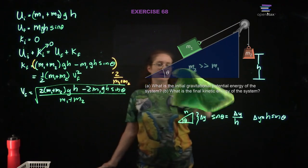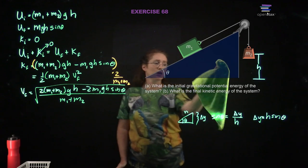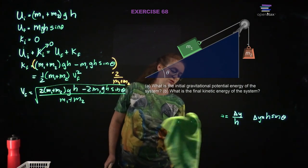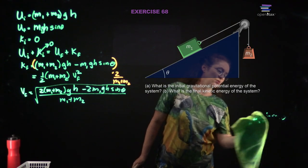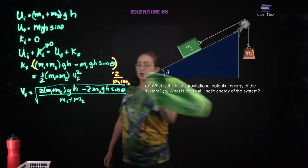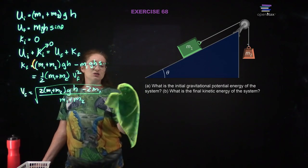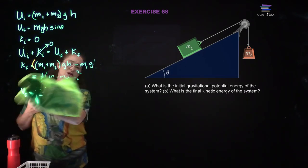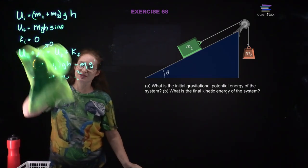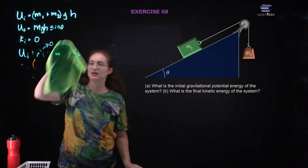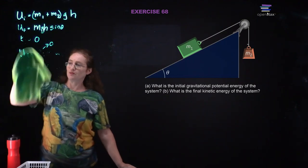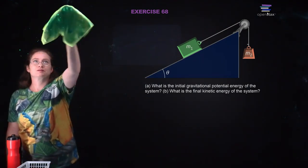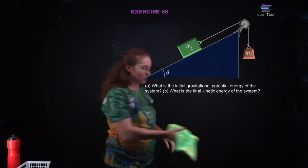To find the final velocity, both masses move at the same speed, so the final kinetic energy is one-half (m1 + m2) v_final squared. Solving for v_final by multiplying through by 2 over (m1 + m2), the final velocity equals the square root of [2(m1 + m2)gh minus 2 m1 gh sine theta] divided by (m1 + m2). It's an ugly expression but it gets you there.